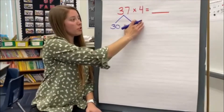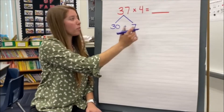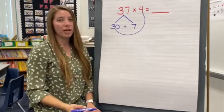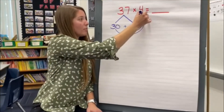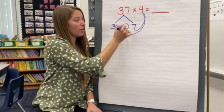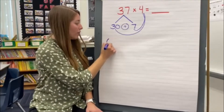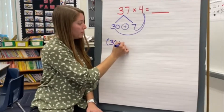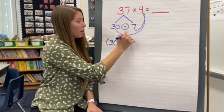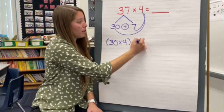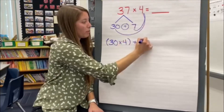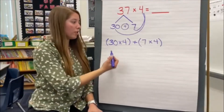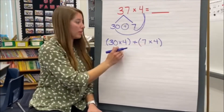Now we're ready to use the distributive property to help us multiply. What we're going to do is 30 times 4 and 7 times 4, and we're going to put those equations together. I can write them down like this: 30 times 4 plus 7 times 4.